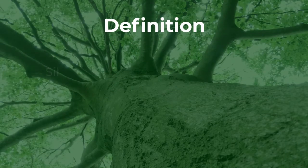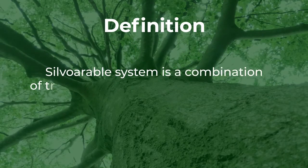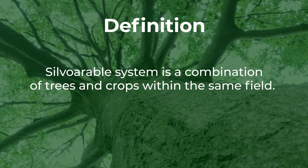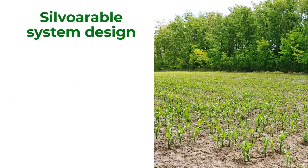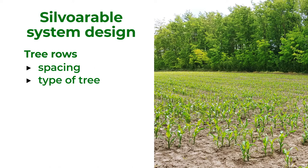A silvo-arable system is a combination of trees and crops within the same field, typically as lines or strips of trees between crops. Due to the need to maintain the possibility of mechanized cultivation of crops, it is usually called alley cropping. Designing such a system requires many factors to be considered, such as spacing of the tree rows, usually 10 to 40 meters, as well as spacing of trees within each row, usually 4 to 10 meters, depending on tree species and crop cultivation.